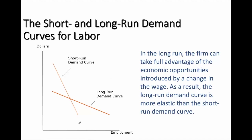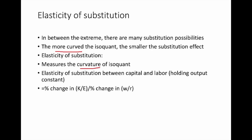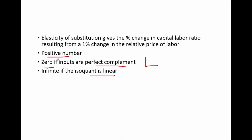To recap, in this session we looked at the shape of the long-run demand for labor and made a comparison between short-run and long-run demand in terms of elasticity. We also learned the concept of elasticity of substitution, which measures how curved the isoquants are, with two extreme cases where inputs can be either perfect substitutes or perfect complements. Using the elasticity of substitution formula, we can identify whether inputs are perfect complements or perfect substitutes.